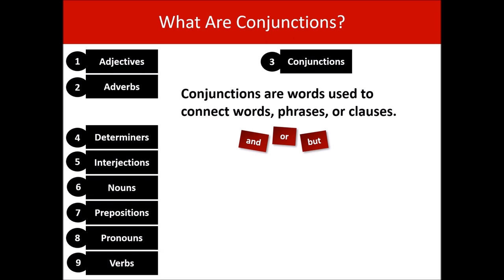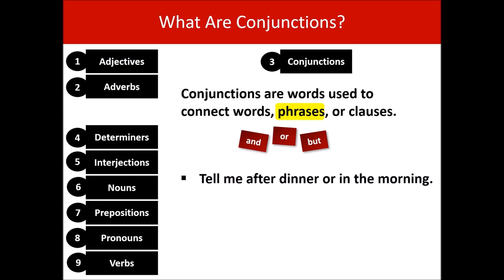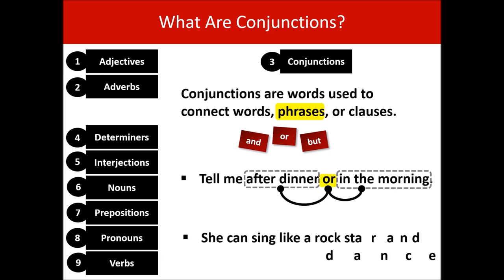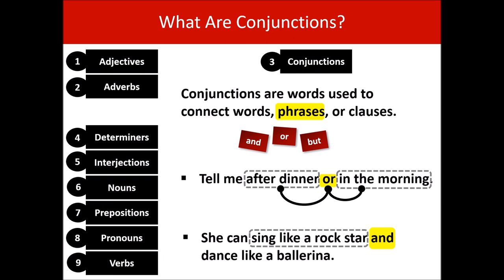Let's see how conjunctions can join phrases. Tell me after dinner or in the morning — 'or' connects the phrase 'after dinner' and the phrase 'in the morning.' She can sing like a rock star and dance like a ballerina — 'and' joins the phrase 'sing like a rock star' and the phrase 'dance like a ballerina.'